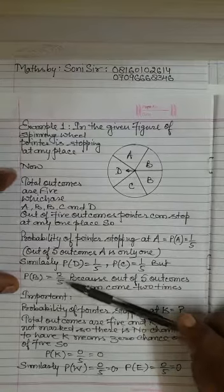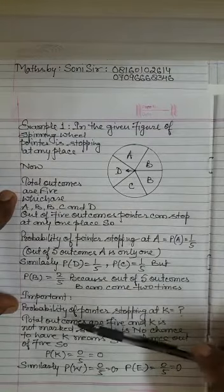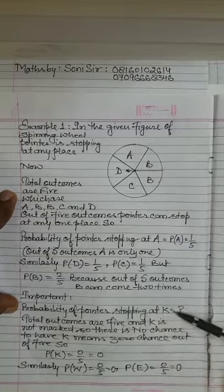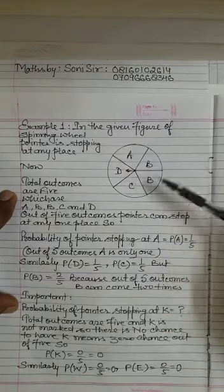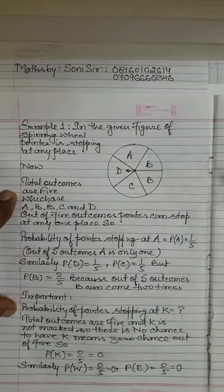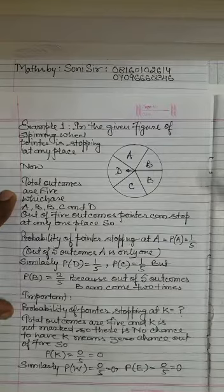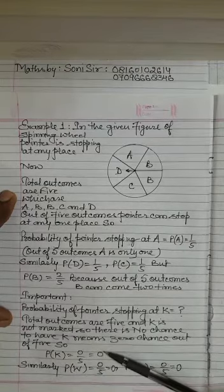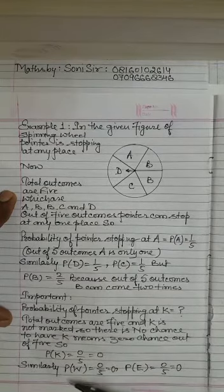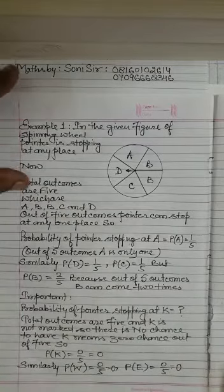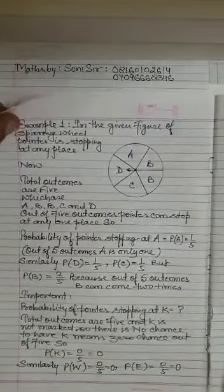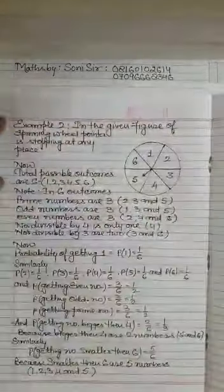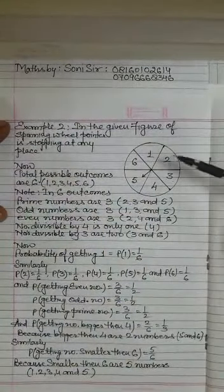Important: probability of pointer stopping at K — K is not given on the wheel, meaning the pointer can't stop at K, so the chance is zero. Probability of getting K is zero upon five, which equals zero. Similarly, probability of getting W is also zero, and probability of getting E is also zero.